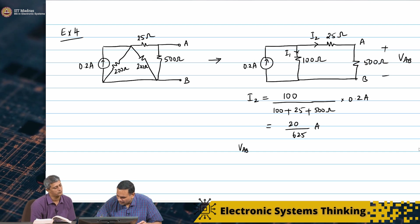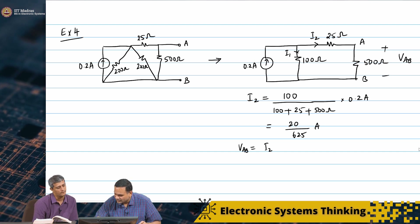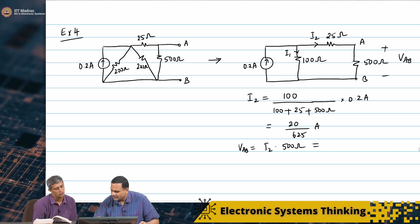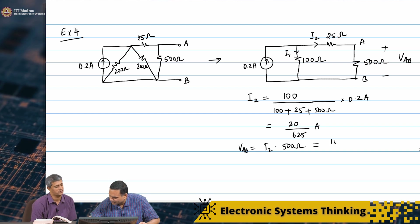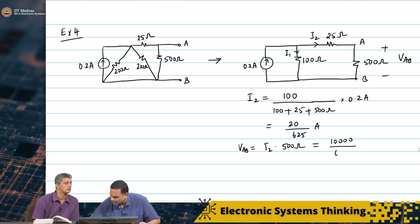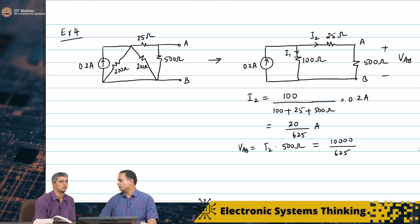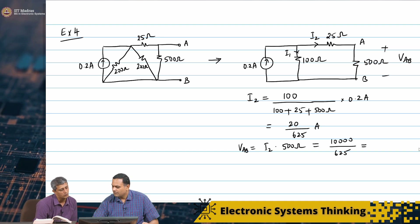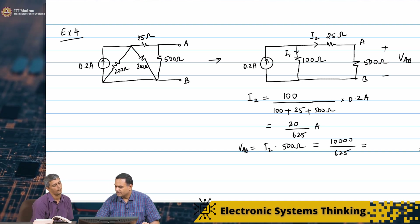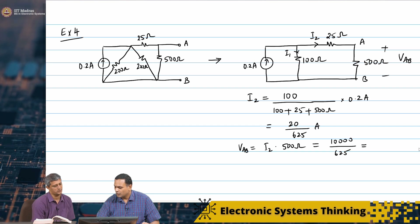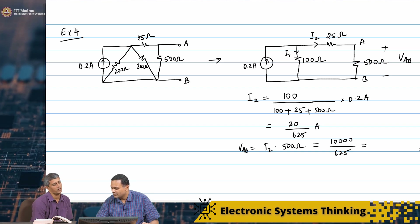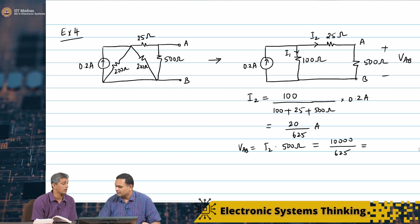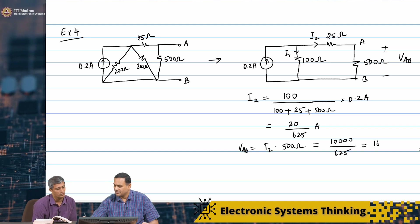VAB is simply I2 times 500 ohms. This is 10000 by 625, which is 400 by 25, which is 16 volts.